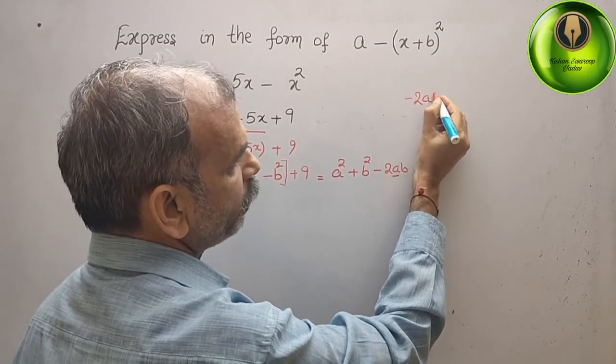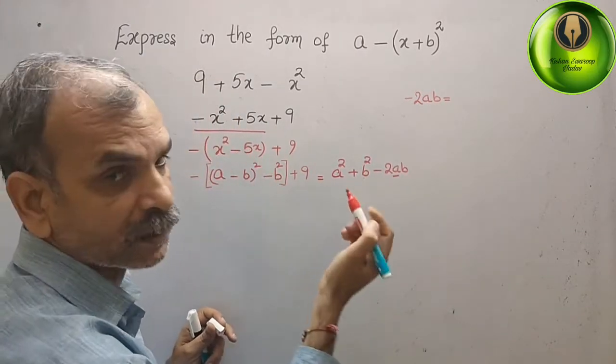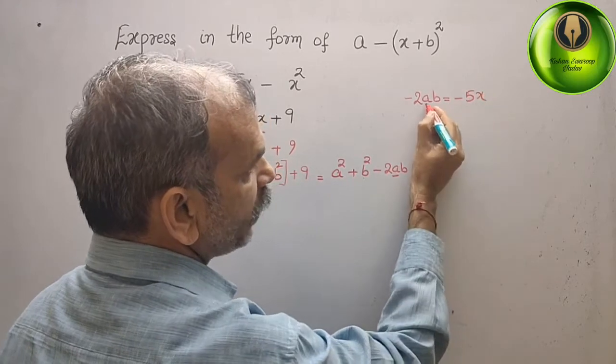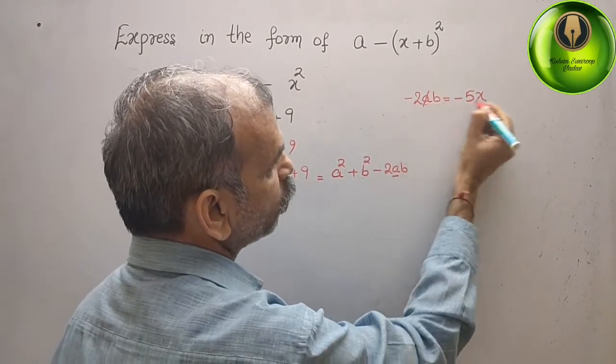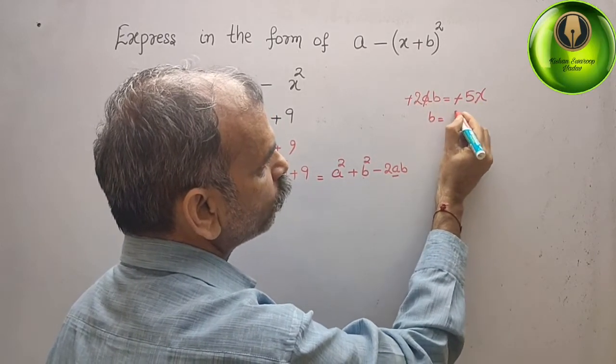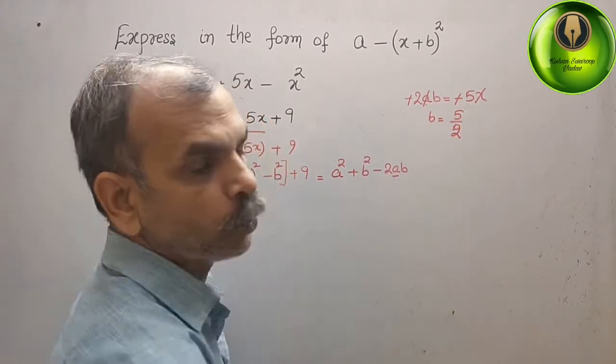Now go for minus 2ab. Minus 2ab is equal to what? Minus 5x. We know that a is x only. So, it will go out. Minus and minus gone. b is equal to 5 by 2.